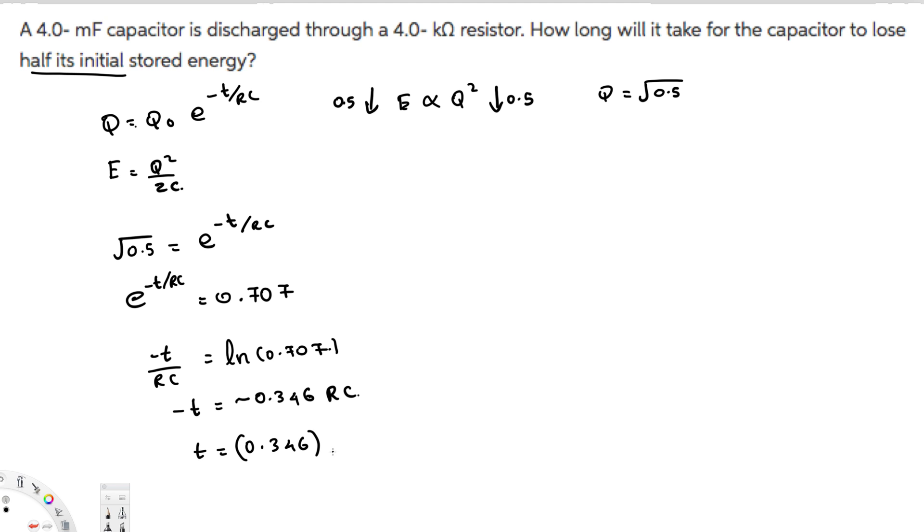R is the 4 kilo-ohm resistor, so that's 4 times 1000 ohms. C is the capacitance, 4 millifarad, which is 4 divided by 1000. The thousands cancel out.